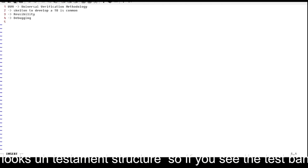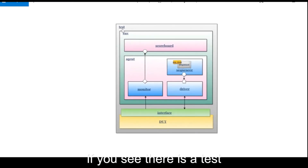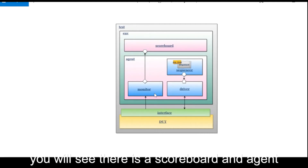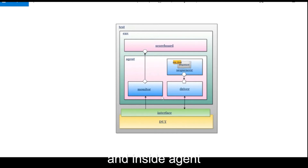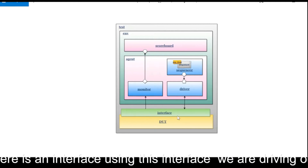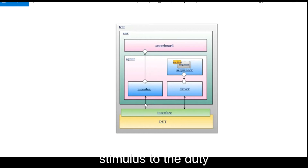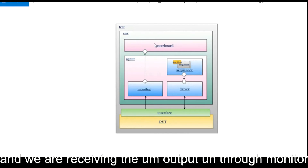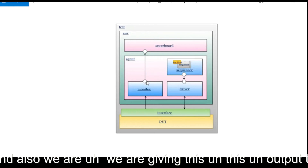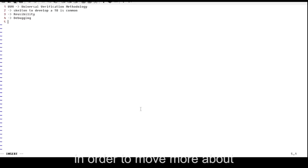The UVM testbench structure looks like this: there is a test, then there is an environment, and inside the environment you will see a scoreboard and an agent. Inside the agent there is a sequencer, driver, and monitor. There is an interface through which we drive stimulus to the DUT, and we receive the output through the monitor, which is also given to the scoreboard.